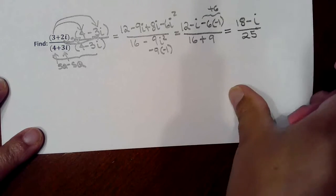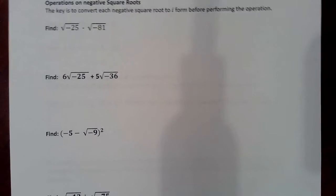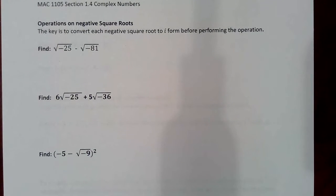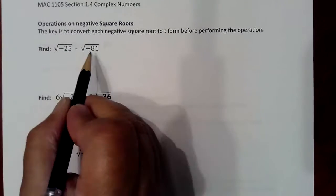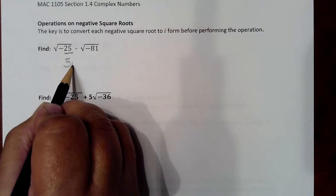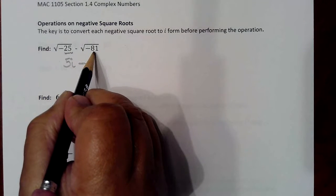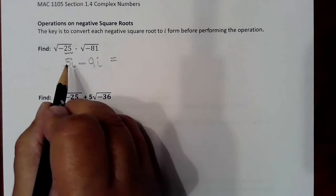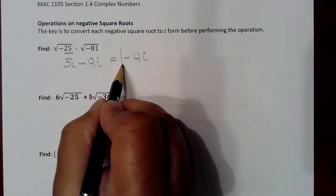Moving to the last page, we're doing various operations with negative square roots. The trick with these problems when they are presented as negative square roots is to get them into their i-form first, then perform whatever operation you're asked to do. For this first one we're subtracting: square root of negative 25 minus square root of negative 81. Converting: √(-25) = 5i and √(-81) = 9i. Then performing the subtraction, 5 minus 9 gives negative 4i as the final answer.